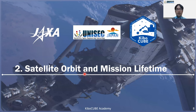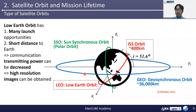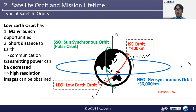Section 2: satellite orbit and mission lifetime. There are some variations in available satellite orbits. One is geosynchronous orbit, used for broadcasting satellites, weather satellites, and communication satellites. But for micro and nanosatellite developers, low Earth orbit — LEO — is normally selected because there are many launch opportunities and a short distance to the ground station.